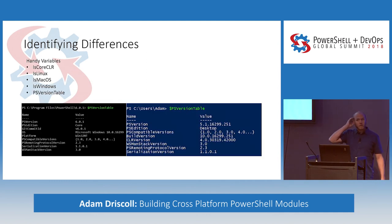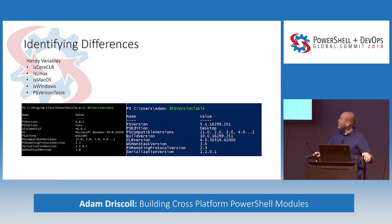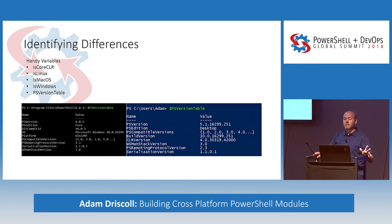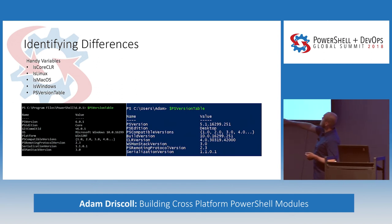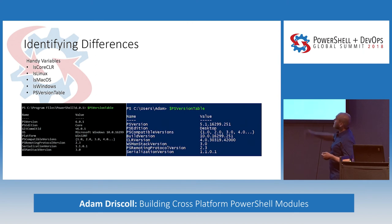Some simple things you can do to identify where you are and what you're running on are using the new built-in variables and additions to PSVersionTable. If you're running PowerShell Core, you'll have access to `$IsCoreCLR`, `$IsLinux`, `$IsMacOSX`, and `$IsWindows`, with true or false depending on the platform. PSVersionTable is different between Windows PowerShell and PowerShell Core - in version 5.1 they added PSEdition showing 'Desktop', and on Core it shows 'Core'. You also get access to OS, Platform, and the git commit ID on Core.